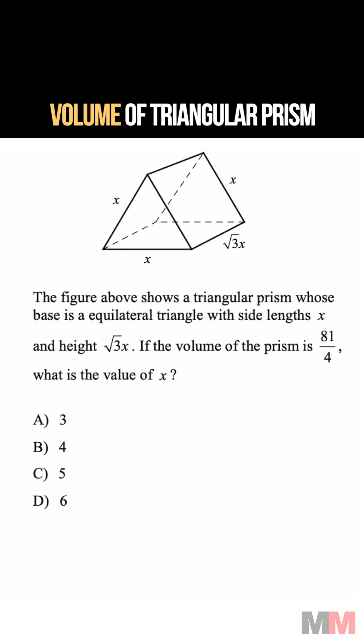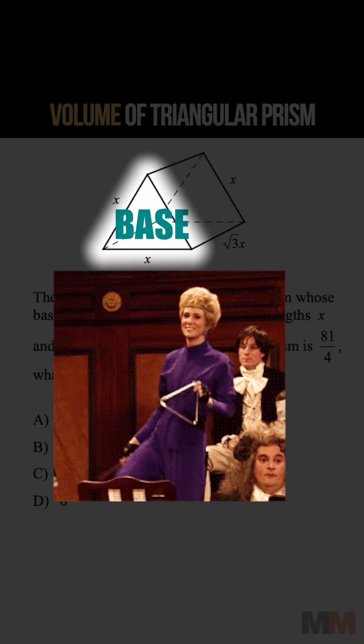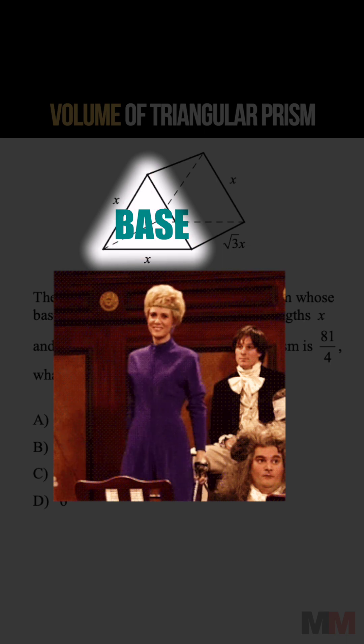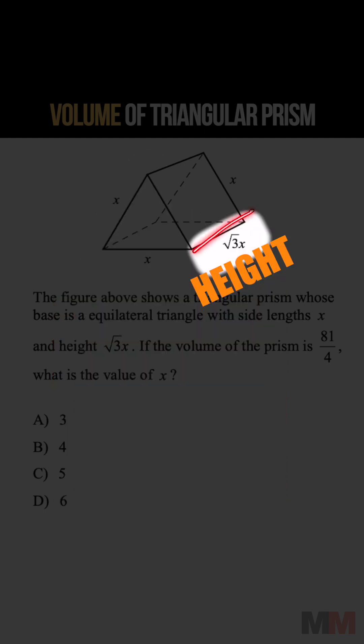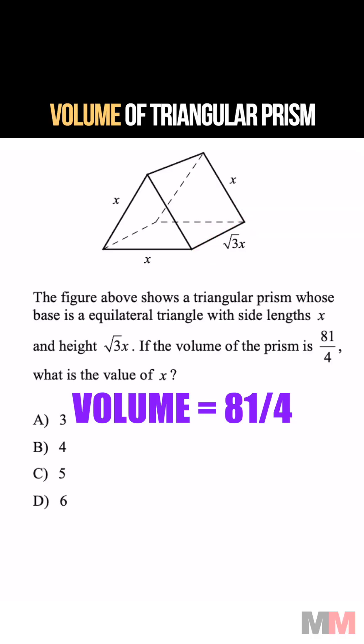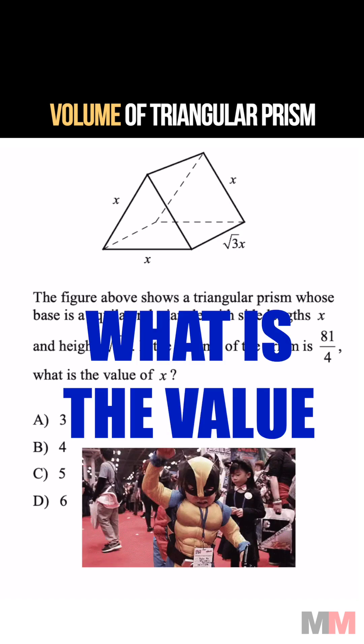We got a triangular figure above, and the base has equilateral triangles with side lengths x. The height of the figure is root 3 times x. If the volume of the prism is 81 over 4, what is the value of x?